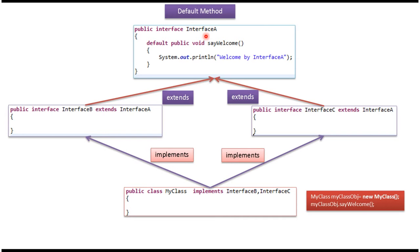Here you can see interface A. It has a say welcome method, and this method is a default method. Here you can see interface B which extends interface A, and interface C which also extends interface A. Here you can see my class which implements interface B and interface C.